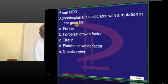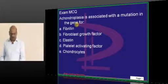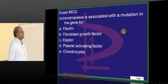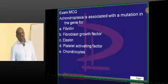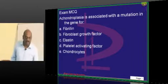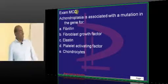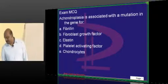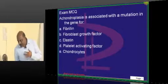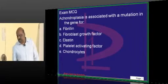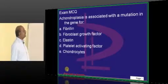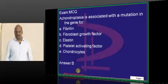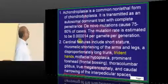Let us take up one exam MCQ. Achondroplasia is associated with the mutation of which gene? The answer is fibroblast growth factor receptor 3. This is a common MCQ.